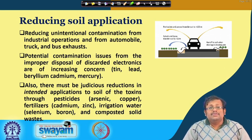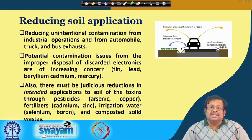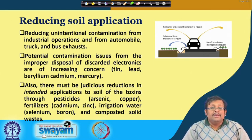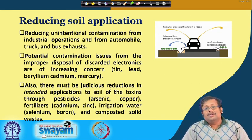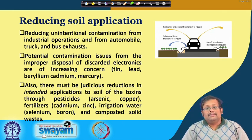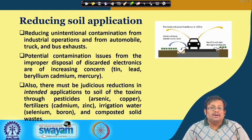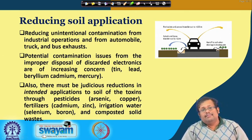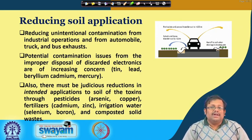Potential contamination from improper disposal of discarded electronics is of increasing concern. Lead, beryllium, cadmium, and mercury are important parts of electronics, so when disposed improperly they go to the environment and contaminate it, and must be dealt with very carefully. Also, there must be judicious reduction in the intended application of toxins such as pesticides. There is a worldwide drive for reducing pesticide application, promoting integrated nutrient management where inorganic pesticides containing arsenic, copper, cadmium, zinc, and other heavy metals are replaced by organic pesticides.